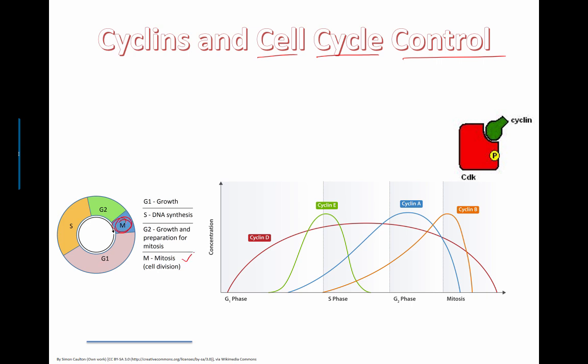M is our famous mitosis where the cell actually divides. So that includes prophase, metaphase, anaphase, and telophase. Then you have these other three parts of the cell cycle. G1, which stands for growth, or the first growth phase.